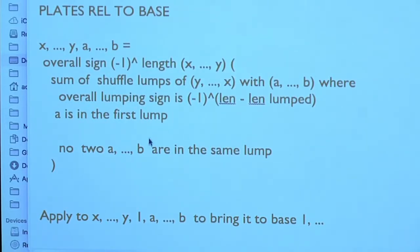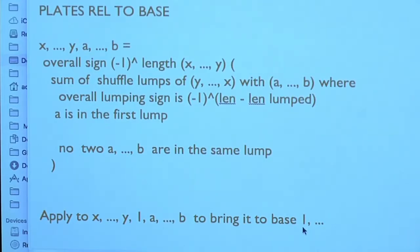The condition here is that you can lump as you wish, but no two elements from the second set (the b's) may be in the same lump. This is applied to x, y, 1, a, b and brought to the base which starts with 1. This is a relation of the plates to the base. The proof involves writing them in terms of trees — that was the reason for going to trees. If you want the values of a plate at a point on a shard, it depends on the knowledge of shards, which are unclassifiable at this moment in mathematics.